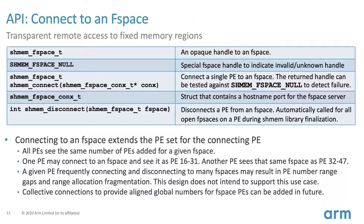The connection protocol provides transparent remote access to fixed memory regions. We have a handle to an F-space and a special value to test if your connection failed. We connect with a connect function using a connection structure — in our implementation just an IP address and port since we connect over IP over IB — and the disconnect function simply cancels all open files and cleans everything up.